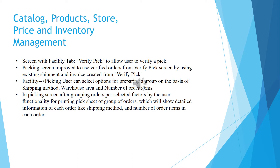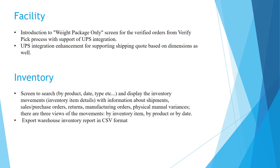After grouping orders per selected factors, the printing pick sheet functionality shows detailed information of each group, like shipping method and number of order items in each order — one, two, three or more — so that the group of orders are created according to selected options. Facility introduction to weight package only screen for the verify order from verify pick process, with support of UPS integration.